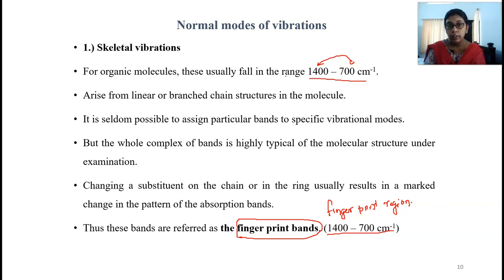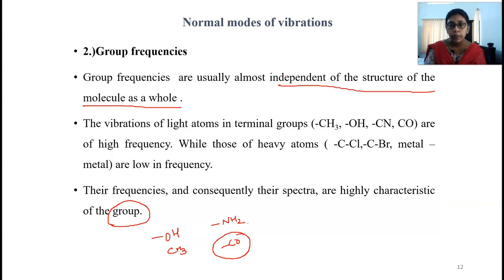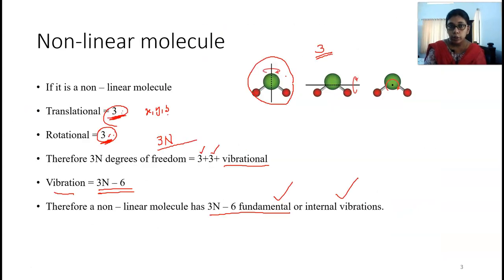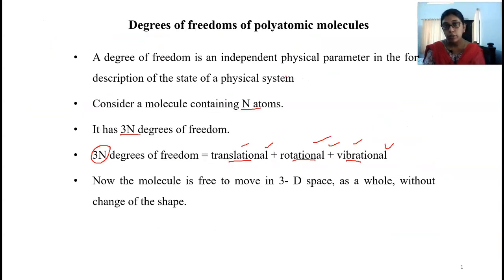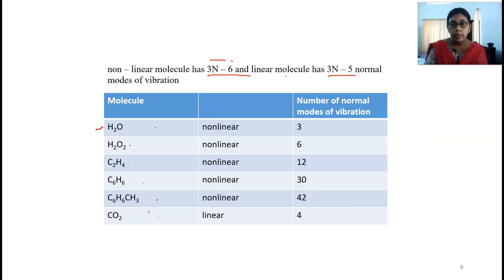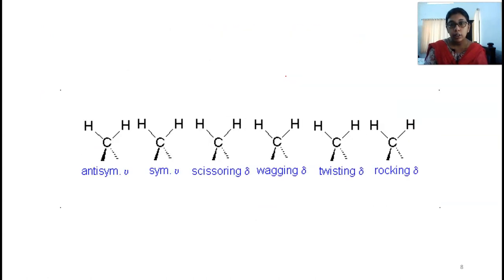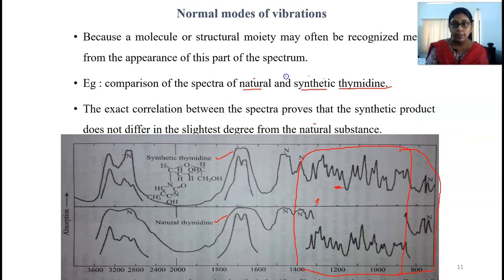So, group vibrations and skeletal vibrations are different. Group vibrations can be assigned a particular range of frequency for a particular functional group, while skeletal vibrations in the fingerprint region are unique to the molecular structure. That is everything regarding the normal vibrations of polyatomic molecules. I hope it is clear to you — this topic is already familiar from undergraduate classes. Thank you.